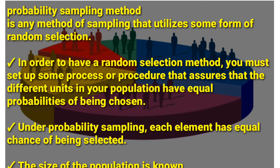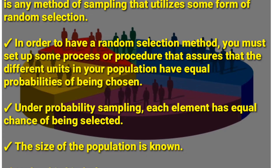We shall start with the probability sampling method. This method utilizes some form of random selection — another name for it is random sampling method. It involves selecting things by chance. You must set up a process that assures that different units in your population have equal probabilities of being chosen. For example, if you toss a coin, both sides have equal probabilities of being chosen. In probability sampling, each element has an equal chance of being selected and the size of the population is known.